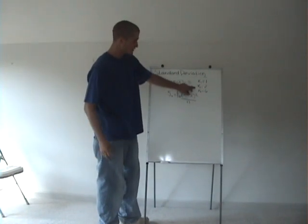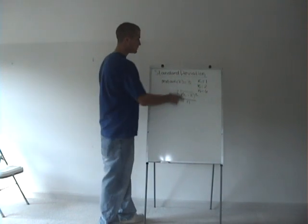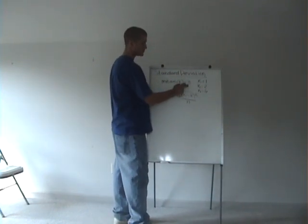So here we have a set of three numbers, 1, 2, and 6, and their average, or mean, is 3.